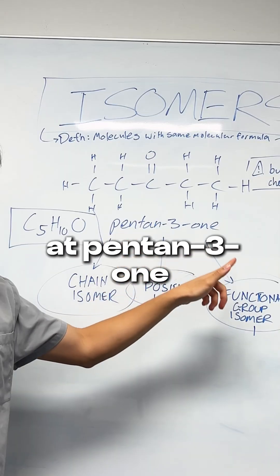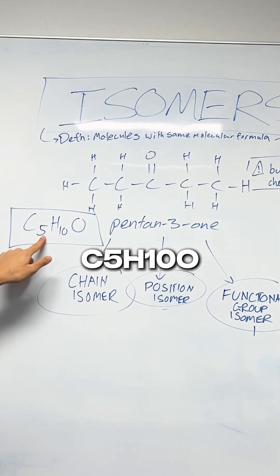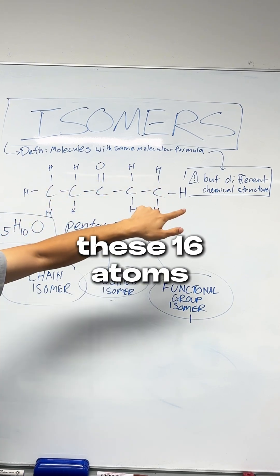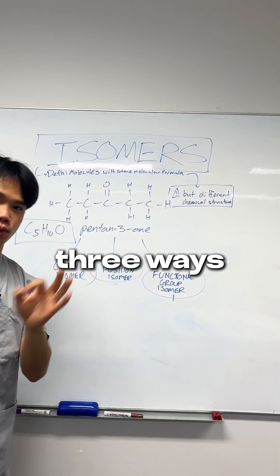So for example, if you look at pentan-3-one with a molecular formula of C5H10O, an isomer is any different arrangement of these 16 atoms to make a different molecule, and you can do that in three ways.